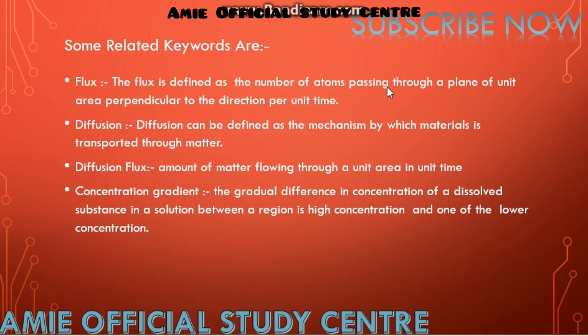Concentration gradient is the gradual difference in concentration of a dissolved substance in a solution between a region of high concentration and lower concentration. Simply put, concentration gradient is dC/dx — the rate of change of concentration per unit change of position. It is represented as dC/dx.